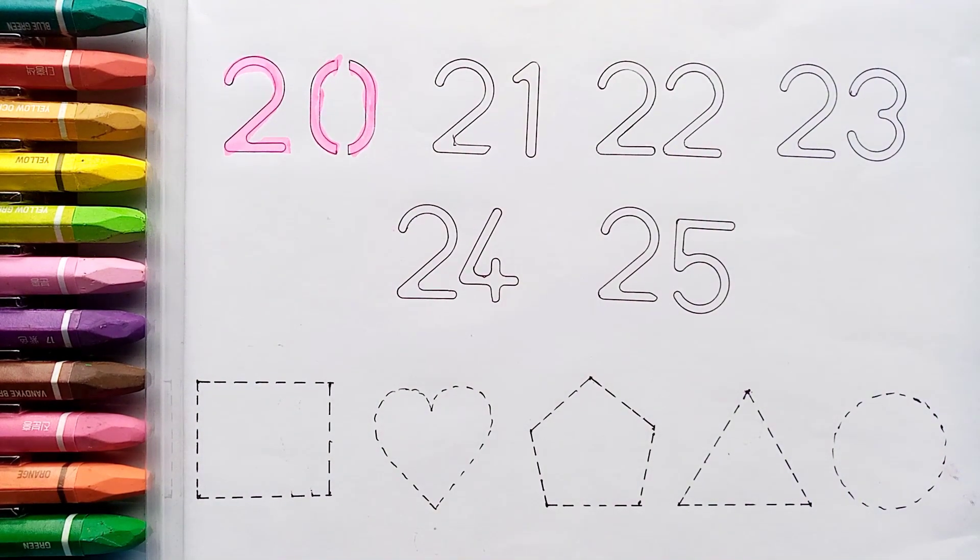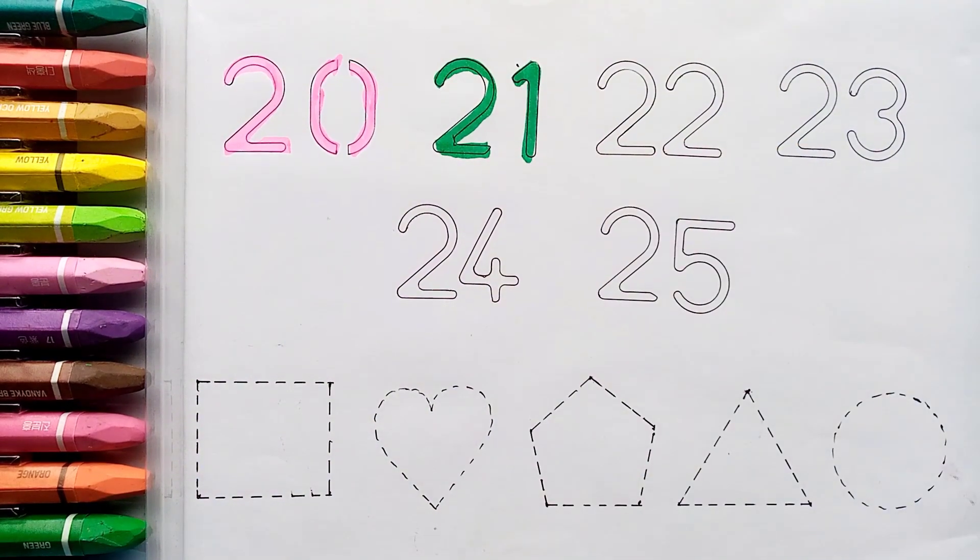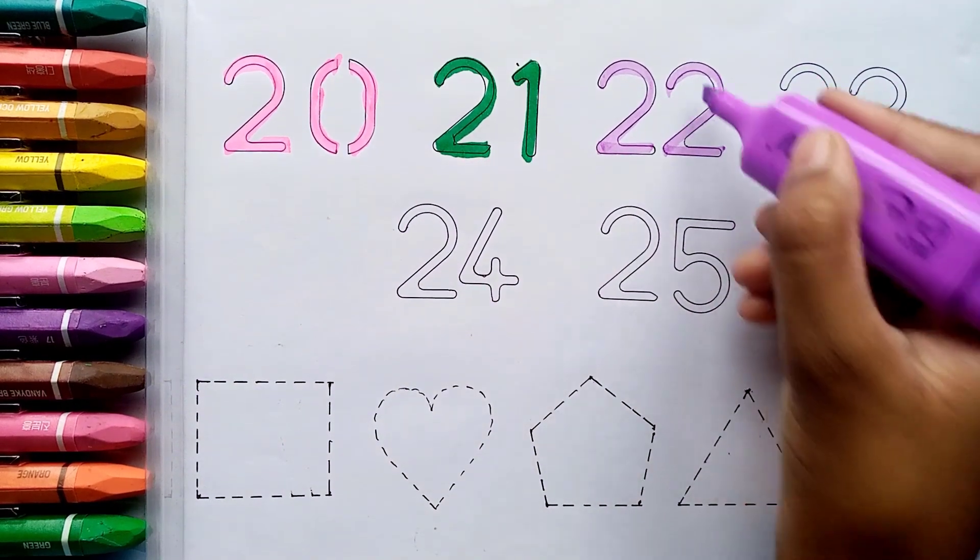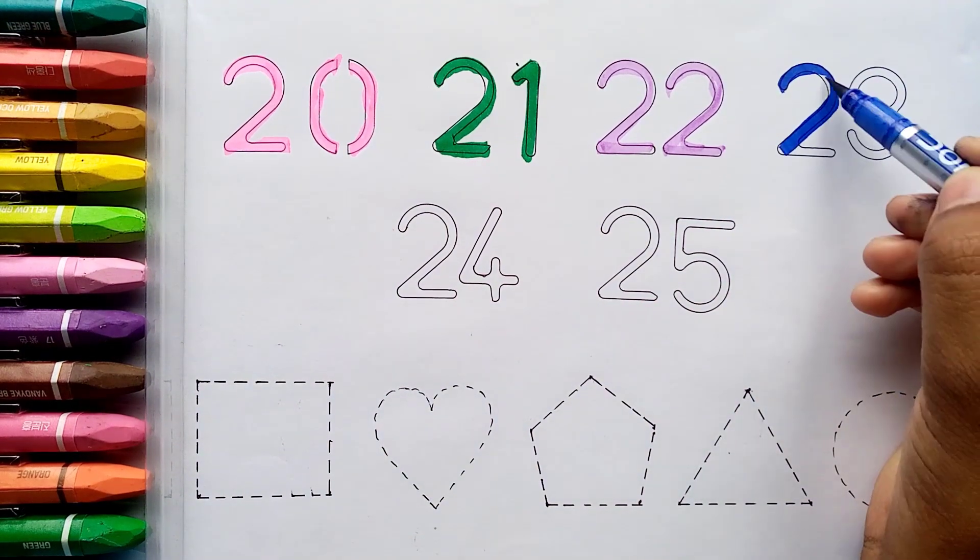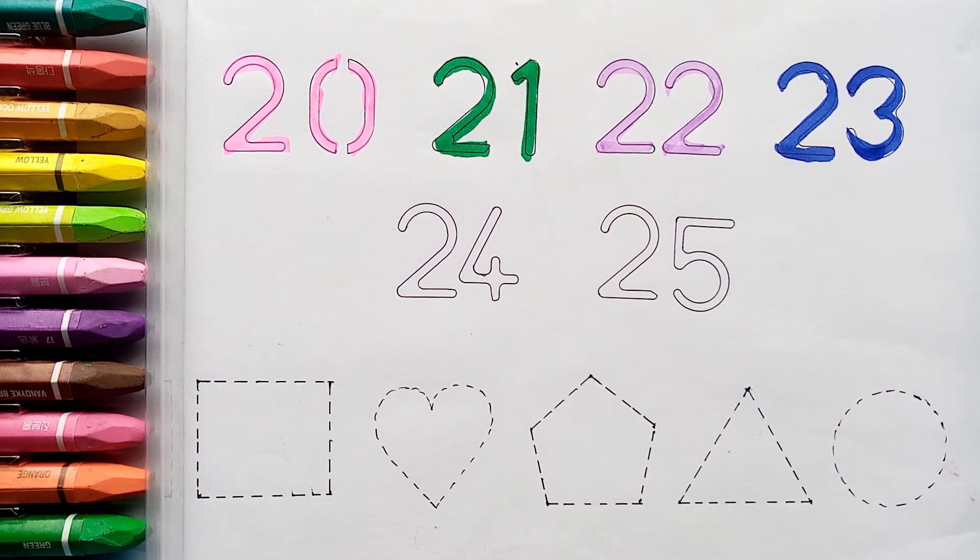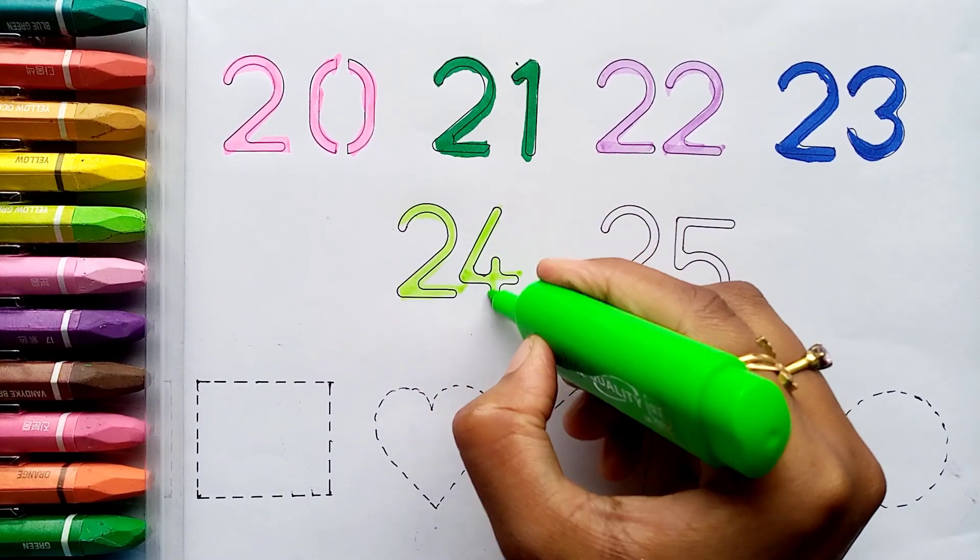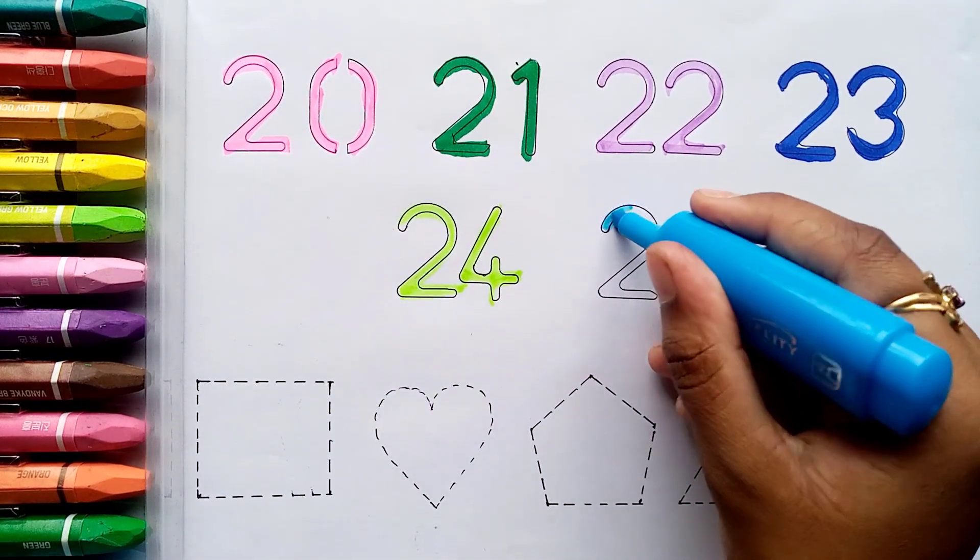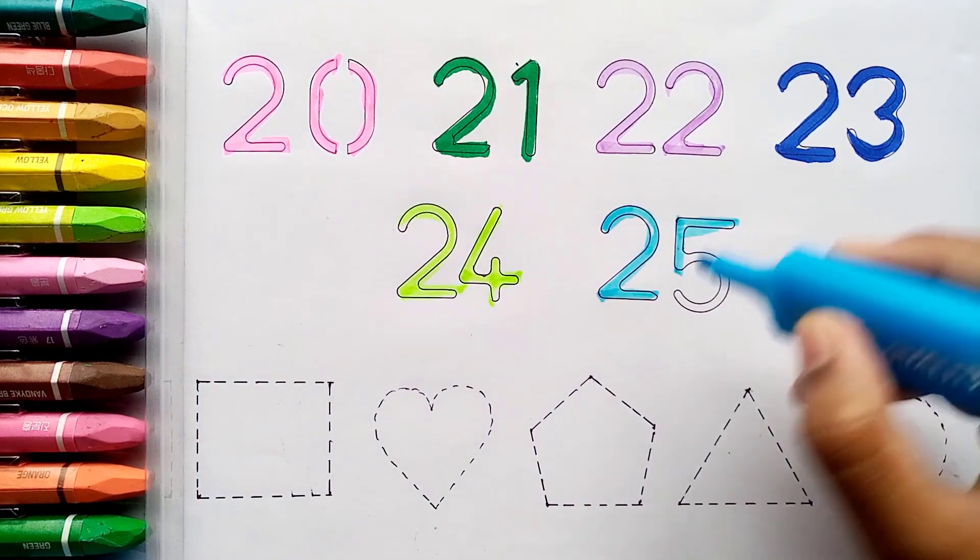Nineteen. Twenty. Twenty-one. Twenty-two. Twenty-three. Twenty-four. Twenty-five.